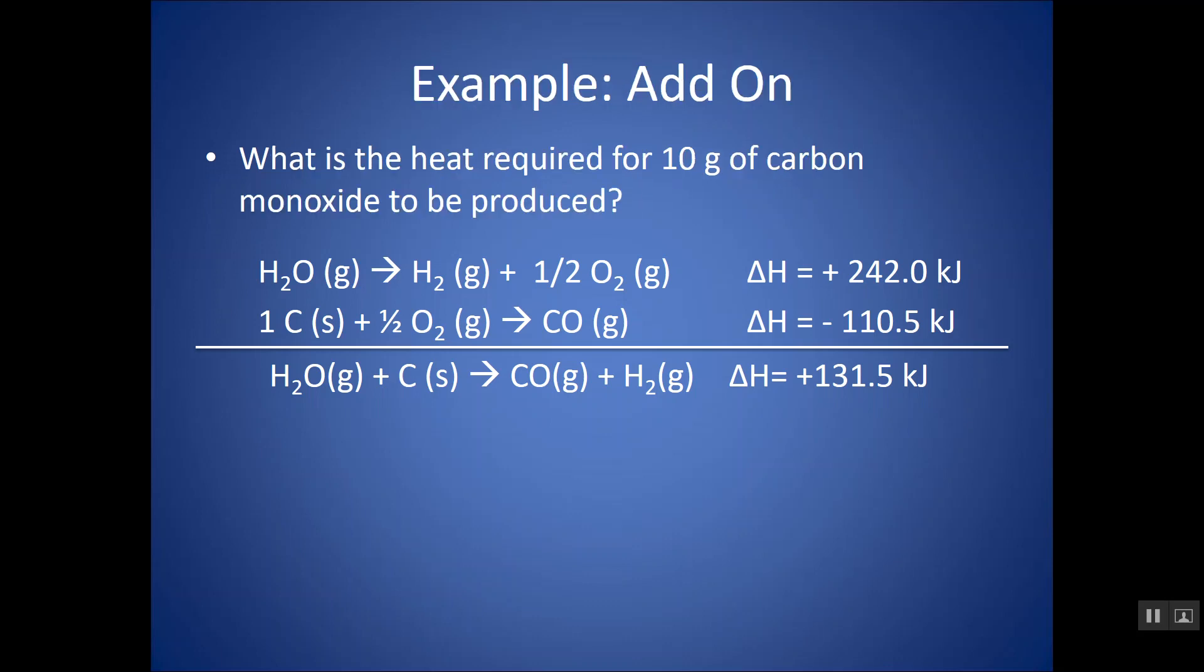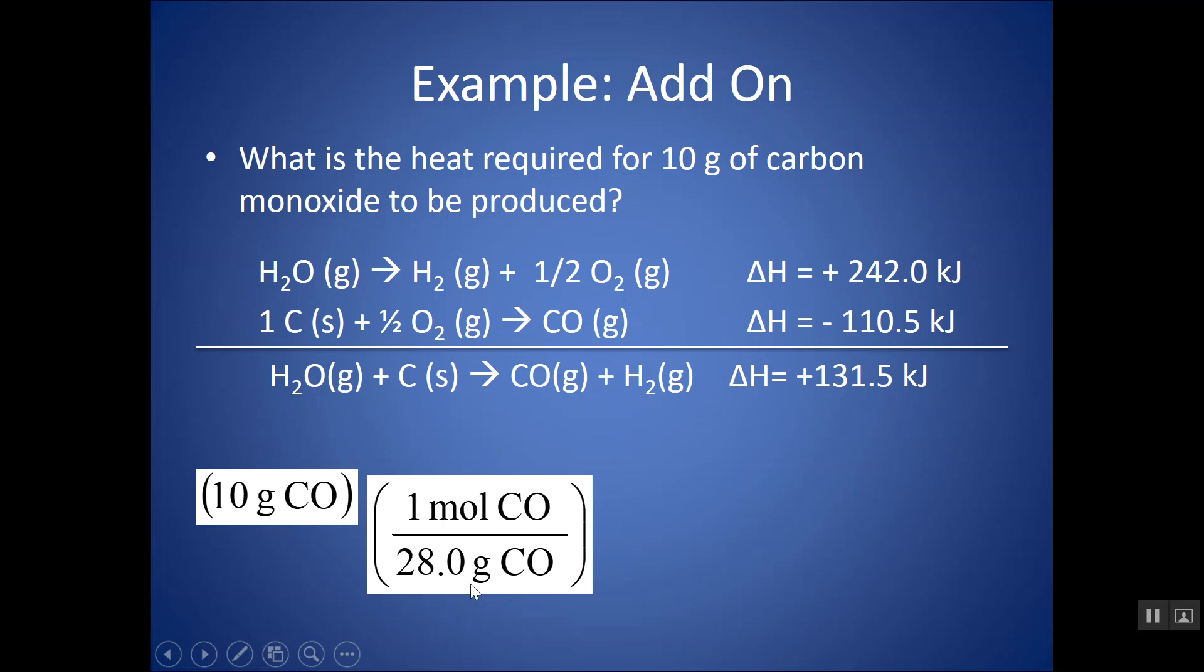Once you find delta H, this lends itself well to other free response question parts. So, maybe now they ask, what's the heat required for 10 grams of carbon monoxide to be produced? Now that I have delta H in my thermochemical equation, we can use that delta H as a conversion factor between heat, kilojoules, and moles of any of these reactants or products. Just like any dimensional analysis problem, I'm going to start with 10 grams of CO. I can't use delta H to relate to grams, but I can use it to relate to moles, so I can mole that out with a molar mass, 28 grams in 1 mole. And, then I can say that this is the heat absorbed for every 1 mole of CO produced.